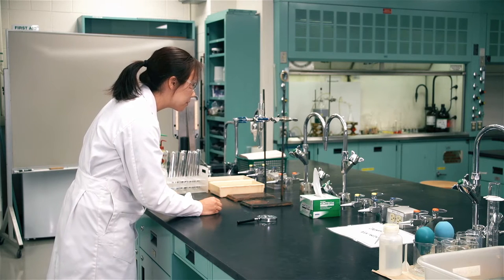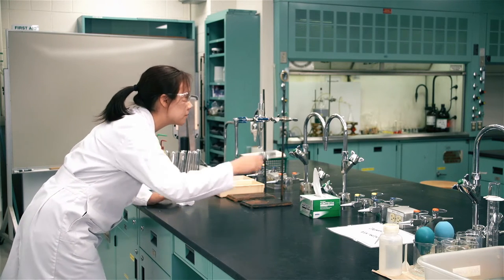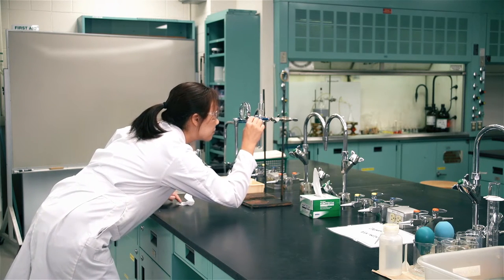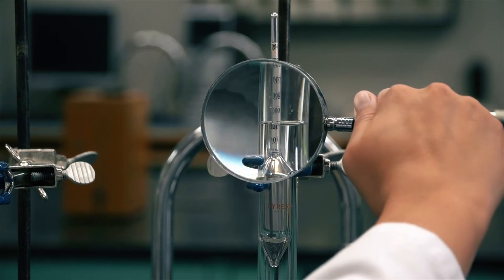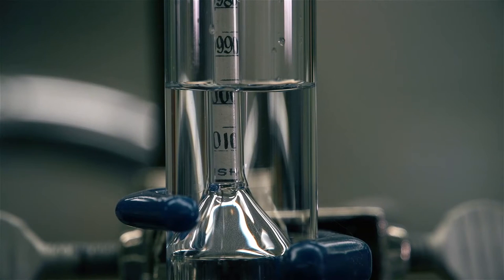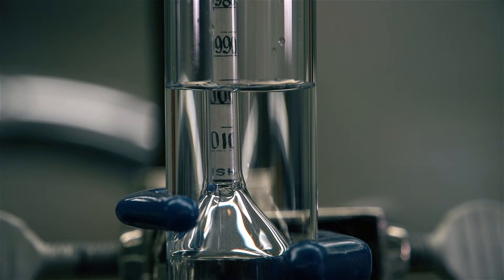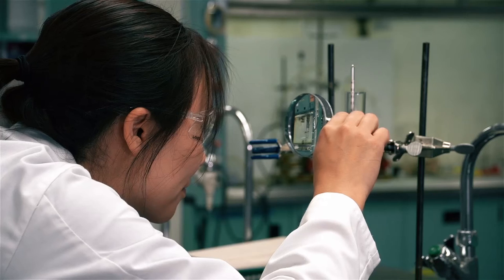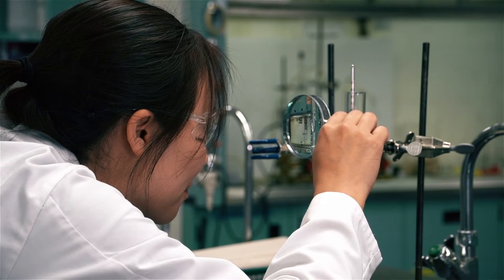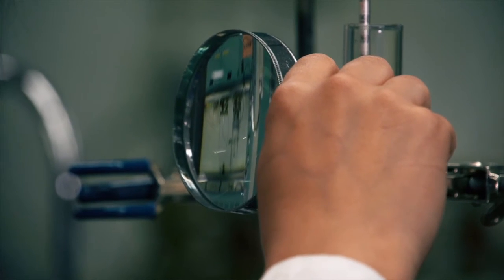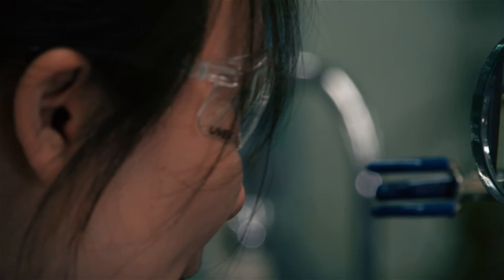When the hydrometer has come to rest and is floating freely away from the walls of the sample container, read the hydrometer to the nearest 0.001 unit. The correct hydrometer reading is that point on the hydrometer scale at which the main surface of the liquid crosses the scale. Determine this point by placing your eye level with the surface of the liquid.